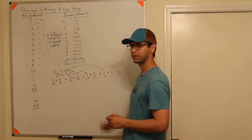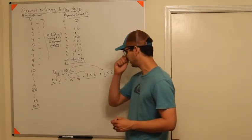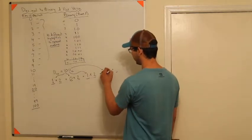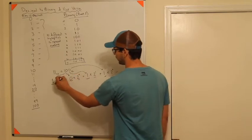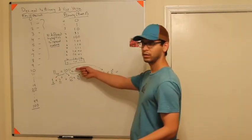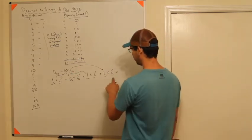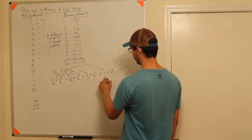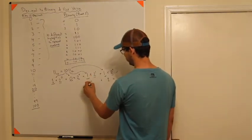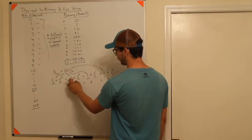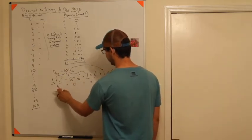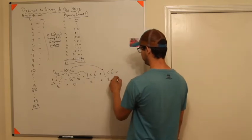You take the digits of your base 2 number and multiply each by 2 to a power. The power starts at 0 and you count up from right to left. That's how you convert from binary to decimal. So: 2 to the 0 is 1, so that's 1. 2 to the 1 is 2. 2 squared is 4, but 4 times 0 is 0. And 2 to the 3 is 8. So 8 plus 2 plus 1 is 11.